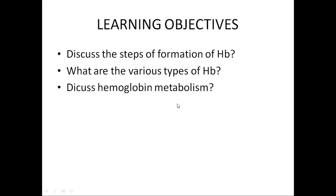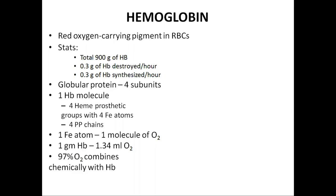Hemoglobin is the principal solid which is present inside the RBCs. It is the red-colored oxygen-carrying pigment present inside the RBC. Its general statistics: in an average person there is a total 900 grams of hemoglobin present.